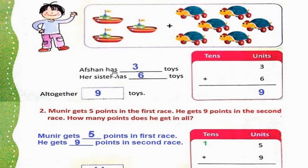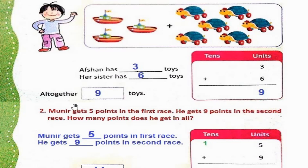Afshah has 3 toys — Afshah کے پاس 3 toys. Her sister has 6 toys — uski sister کے پاس 6 toys. 3 کو 6 سے add کریں. So 3 plus 6 is 9. Altogether 9 toys.